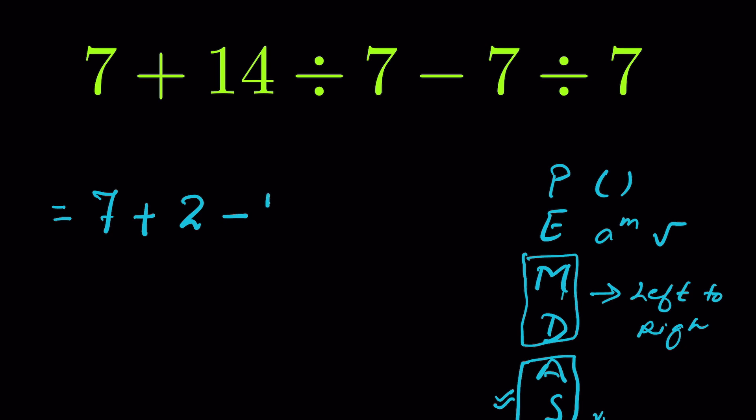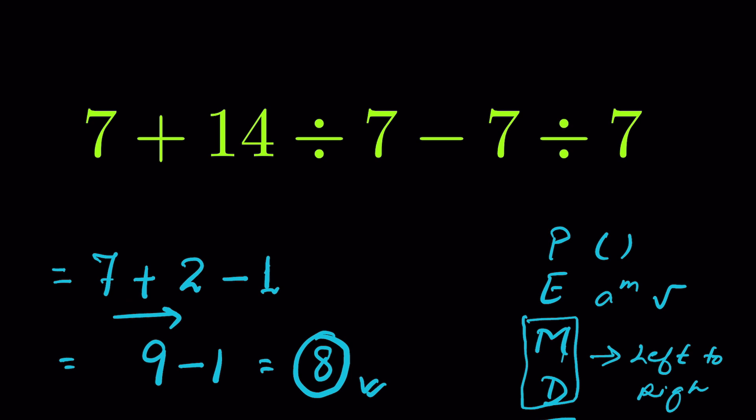Now going from left to right, we have addition first, so it will be 7 plus 2 equals 9, minus 1 is equal to 8 as our answer. If you solve it from left to right, then